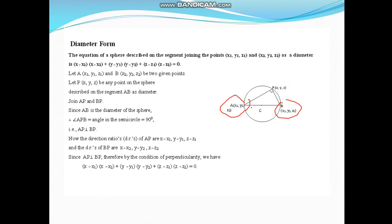And similarly, direction ratios of BP are (x - x₂, y - y₂, z - z₂). Now AP is perpendicular to BP, so we can write: a₁a₂ + b₁b₂ + c₁c₂ = 0. So it is our equation of sphere in diameter form.